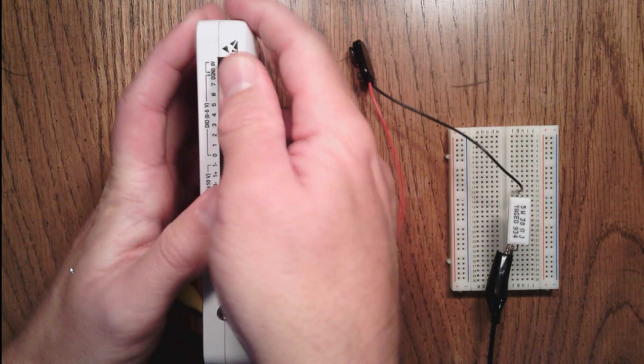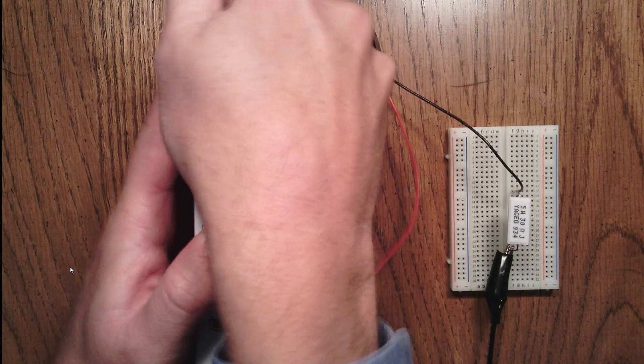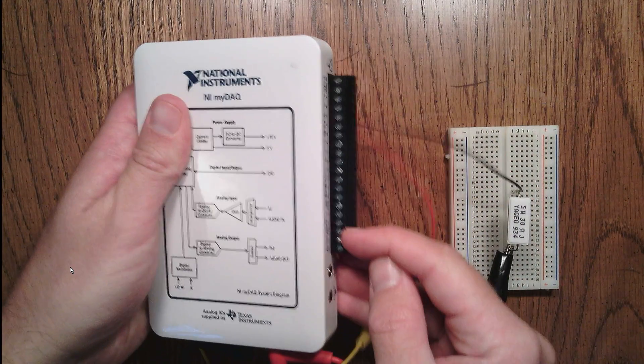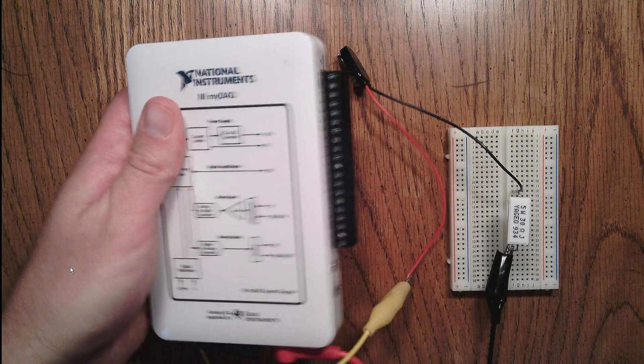It takes a bit of force to clip it in. And once it's in place, we can then use the screw terminal leads right here to connect wires to our breadboard circuit.